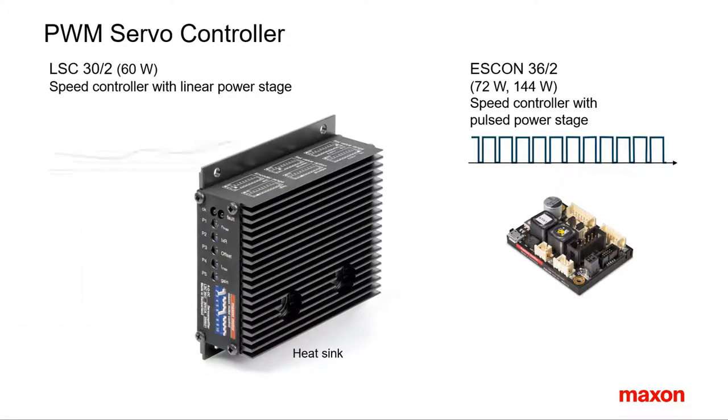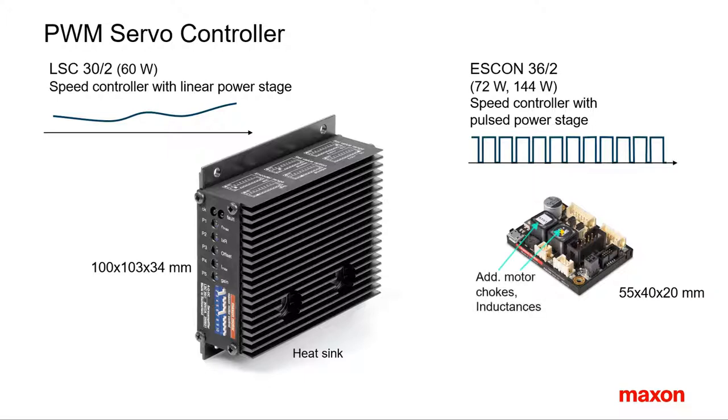As an example, let us compare the size of an older LSC speed controller with linear power stage to the size of a newer ESCON servo controller with pulsed power stage. The pictures are approximately to scale. The dimension of the LSC servo controller is much larger, essentially dominated by its huge heatsink. Observe the additional built-in inductances of the ESCON. The function of them will become clear in the following.